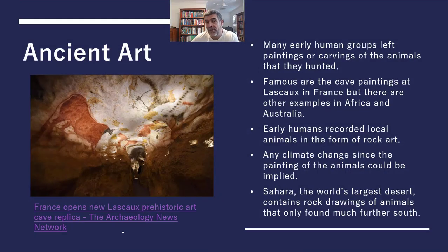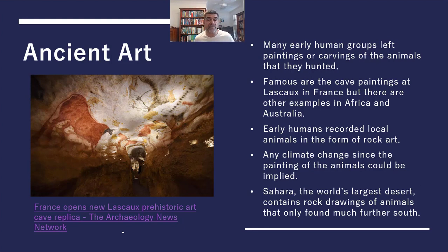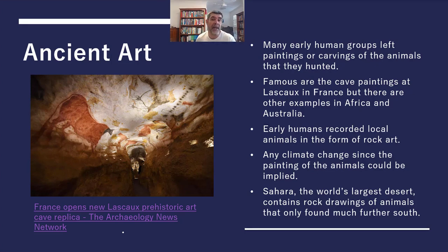There are a lot of examples of ancient art or ancient cave paintings, and we know that many different early human societies left paintings or carvings of the animals that they hunted or at least some of the animals that they found in their local area. Probably one of the most famous sets of cave paintings are at Lascaux in France, but there are also examples in Africa and here in Australia. So we know that early humans recorded their local animals from rock art, and any changes in the climate that may have occurred since those original paintings were created could be implied in terms of what sort of animals may be present in an area today.